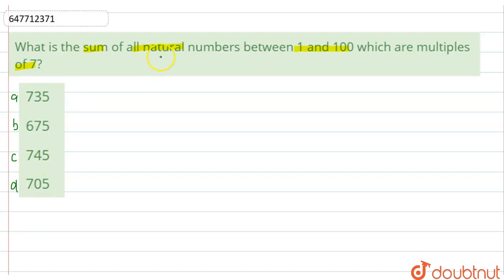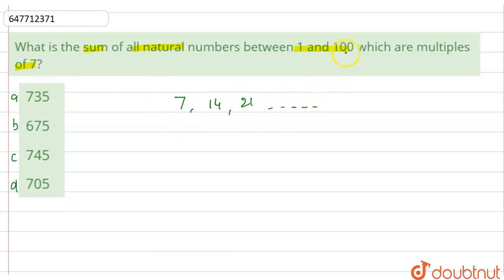सबसे पहले जो minimum multiple है वो क्या है? 7. 7 के बाद क्या होगा? 14. फिर क्या होगा? 21. तो ऐसे करते करते अगर 100 तक जाएं, तो 100 last digit नहीं होगी. 100 तो 7 का multiple नहीं है. 99 है? नहीं है. 98 है? हाँ, है. 14 times 7 = 98, तो 98, 7 का multiple है.